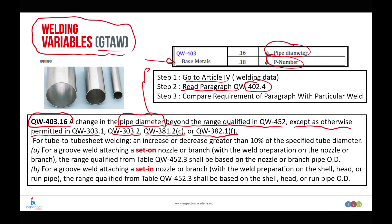QW-452 gives us two cases: the first one for tube-to-tube sheet welding with an increase or decrease greater than 10% of the specified tube diameter, or if it's a groove weld attaching a set-on nozzle or a set-in nozzle, which we will discuss later.